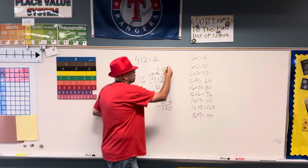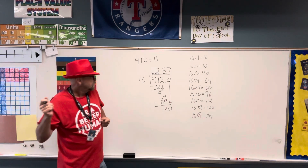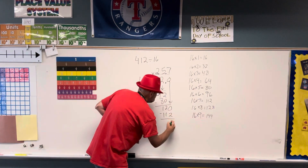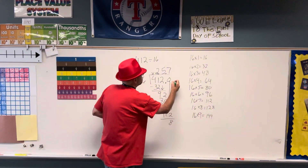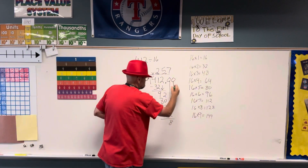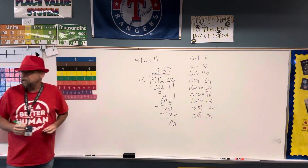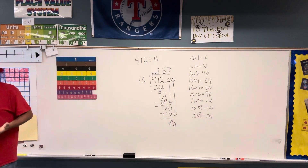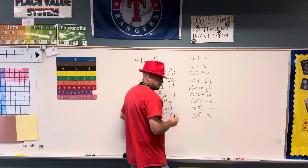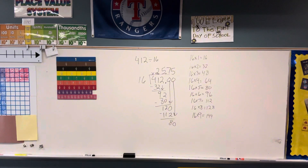Because if I put a 0 here, let's see how far we could go — we might be able to go as far as forever. 7 times 16 is 112. I'm going to get 8. I'm going to bring another 0 down and get 80. So 16 goes into 80 how many times? 5. Five times.